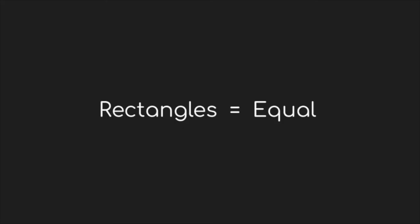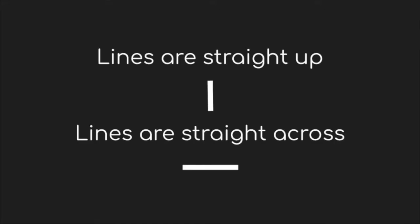Using the rule of threes, we divide our paper into three sections vertically and three sections horizontally, creating nine equal rectangles. Rectangles are equal. No. Yes. And lines are straight up and straight across. No. Yep.